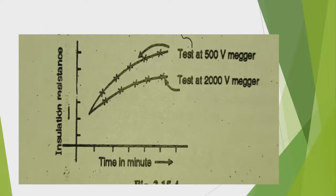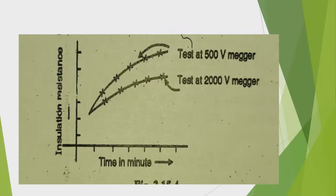Here are the graphs showing measurements — test at 500V Megger and test at 2000V Megger — with time in minutes on one axis and insulation resistance on the other.